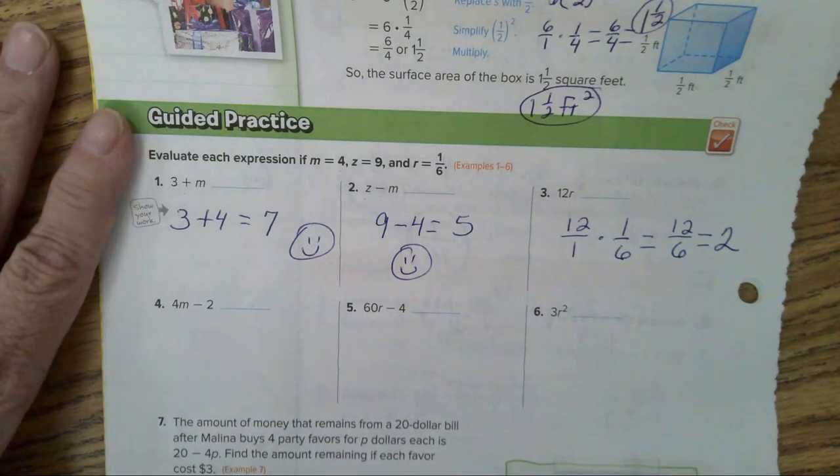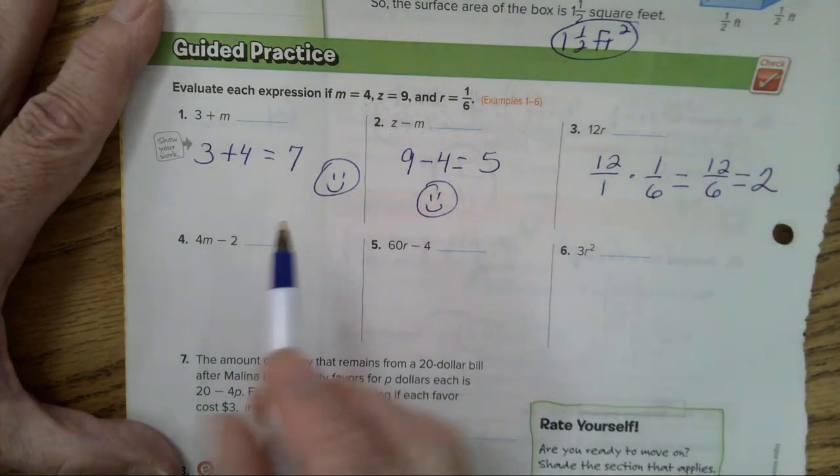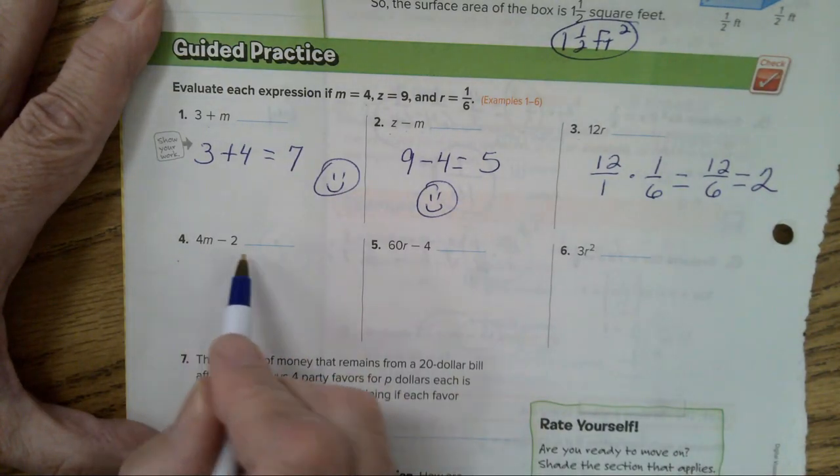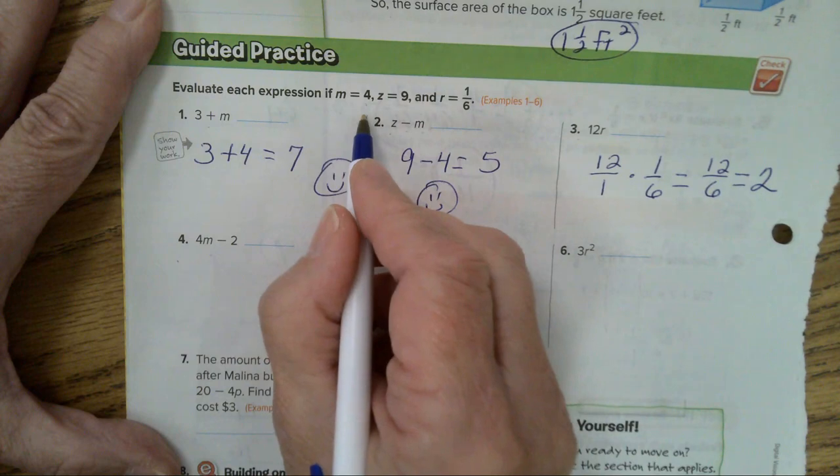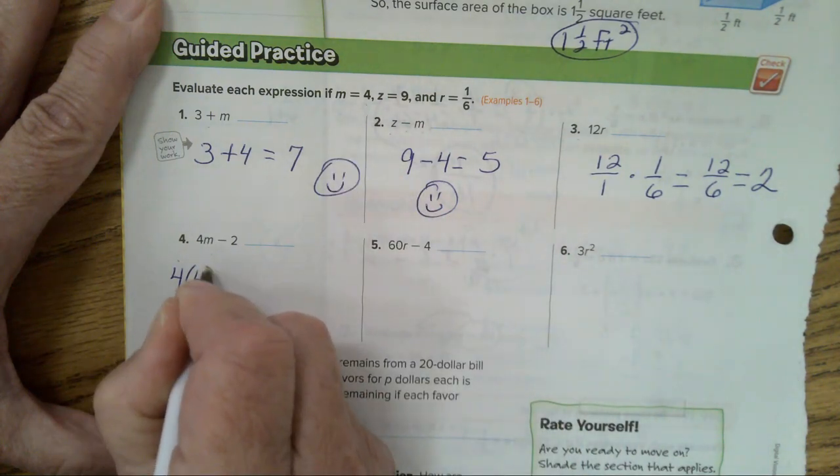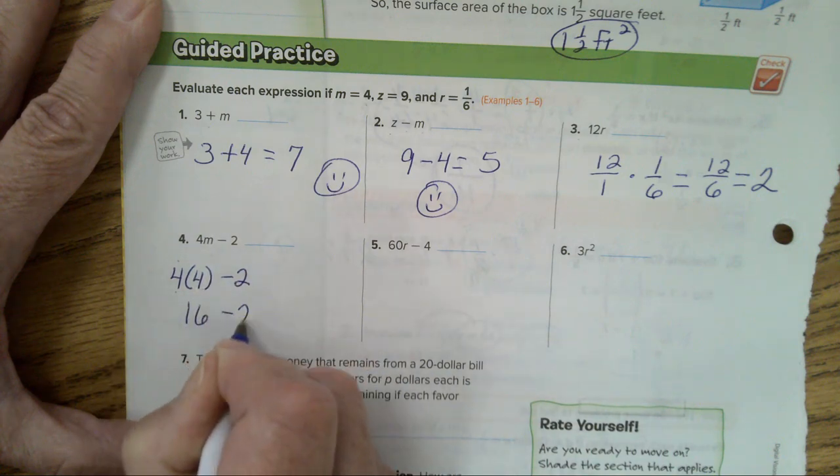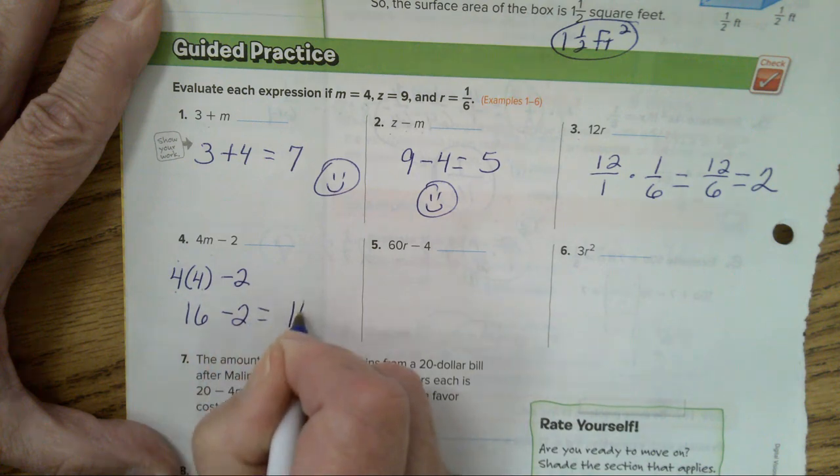Now, we have our two-step expressions. In number 4. 4 times M minus 2. M is 4. It's not 44. 4 times 4 minus 2. 4 times 4 is 16 minus 2 gives you the answer of 14.